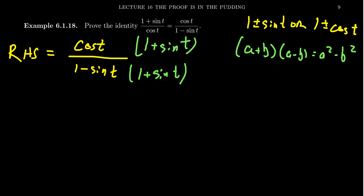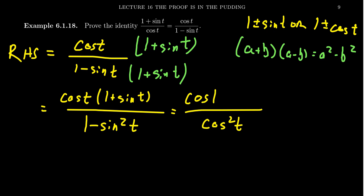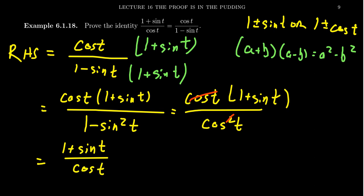I said earlier that you don't ever want to multiply out the denominator, but there are very few times where you do — and this is one of those situations. It takes good judgment to learn when to do so. We're being strategic: 1 minus sine t times 1 plus sine t multiplies out to 1 minus sine squared t. We actually do want to multiply out the denominator here because we can use a Pythagorean identity: 1 minus sine squared becomes cosine squared. We have a cosine in the numerator and cosine squared in the denominator, so one cosine cancels. We end up with 1 plus sine t over cosine t, which is the left-hand side — and we've now finished the proof. When working with fractions, use conjugates if you have things like 1 plus or minus sine or cosine; a Pythagorean identity will be useful in that situation.